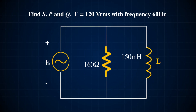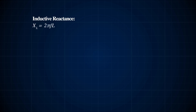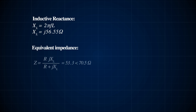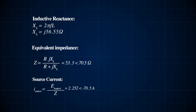Let's solve one problem to put this in perspective. For this circuit, we're supposed to find S the apparent power, P the true power, and Q the reactive power. Our power supply voltage E is rated at 120 volts RMS with a frequency of 60 Hz. Starting by finding the inductive reactance using this equation, we get a complex number j56.55 ohms. We can also calculate the equivalent impedance of the resistor and the inductor. The total impedance expressed in vector coordinates is 53.3 at an angle of 70.5 ohms. Using Ohm's law, V equals IR, we can find the current provided by the source as 2.252 at an angle of minus 70.5 amps.